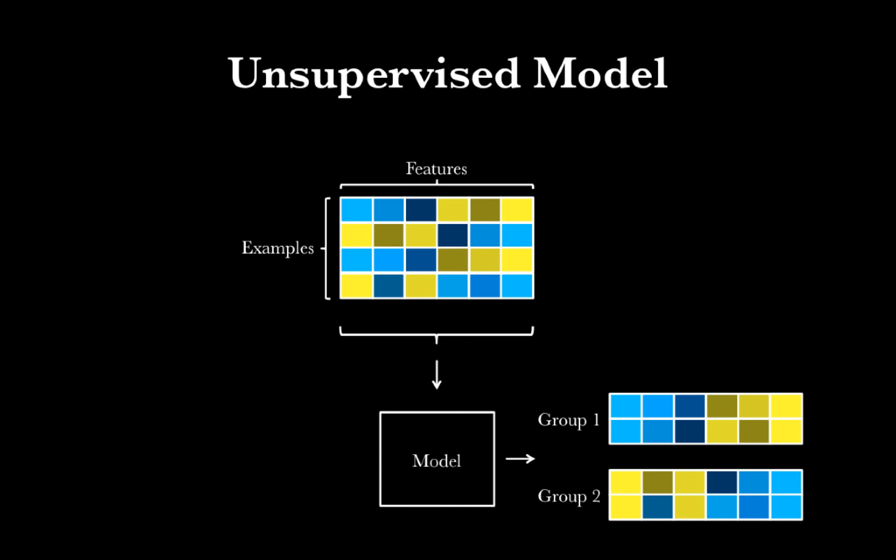You can see that these samples naturally fall out together from the data, and this is the strength of unsupervised learning. It can find patterns in the data, even though we may not understand why those patterns exist.